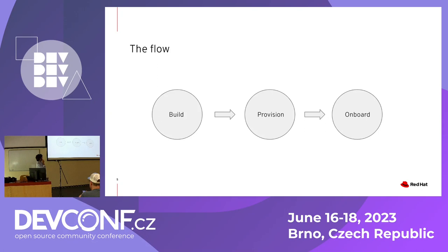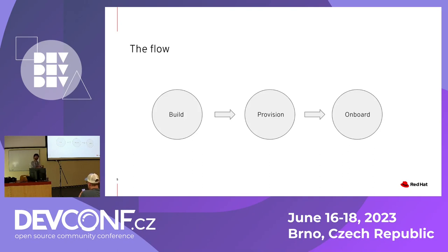Peter Robinson has been preaching this division in the flow. On the left side you have the build phase — when you actually build REL4Edge or Fedora IoT. That part for us has been done through Image Builder. You basically specify the package set, some configuration options, maybe some files to inject, maybe some kernel arguments to tweak, and then what you end up with is an artifact: a raw image, compressed raw image, an installer like the simplified provisioner, or Anaconda itself — anything that boots can be made at this phase.